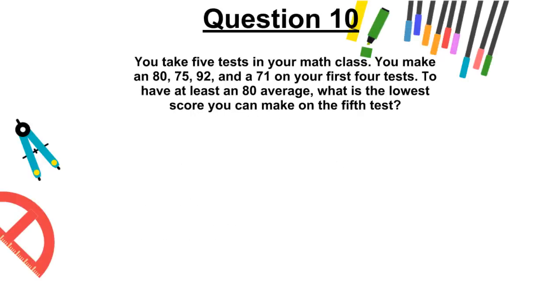Question 10. You take 5 tests in your math class. You make an 80, 75, 92, and a 71 on your first 4 tests. To have at least an 80 average, what is the lowest score you can make on the 5th test?